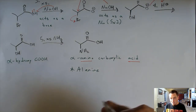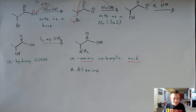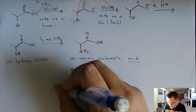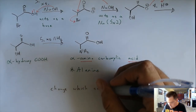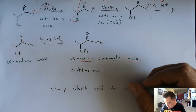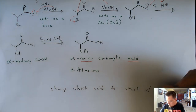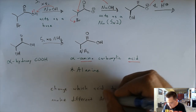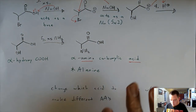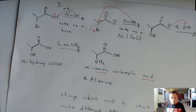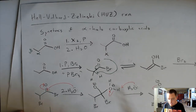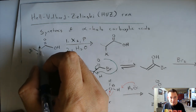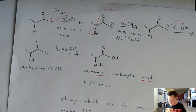All you need to do to make an amino acid is change which acid to start with to make different amino acids. Going back to the original: to choose which amino acid you need, this is your R group. Whatever beta carbon and on — that is your R group for your amino acid in the total synthesis.